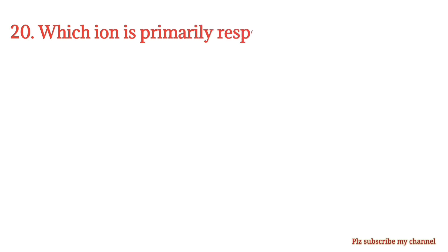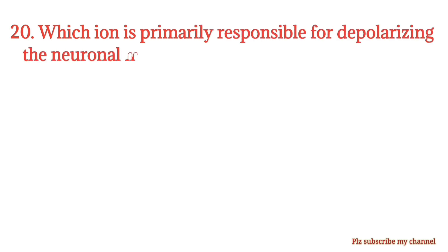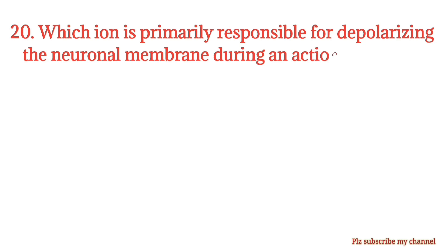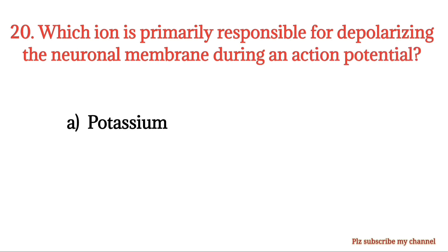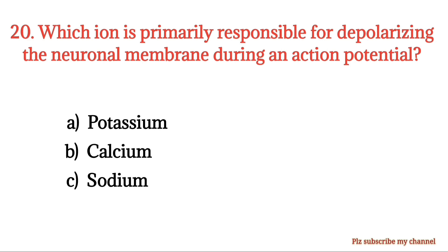MCQ number 20. Which ion is primarily responsible for depolarizing the neuronal membrane during an action potential? Option A: Potassium. Option B: Calcium. Option C: Sodium. Option D: Chloride. The right option is Option C.